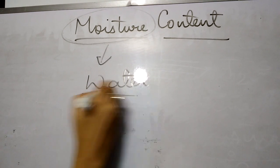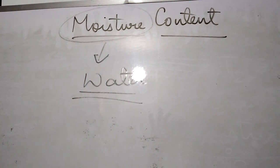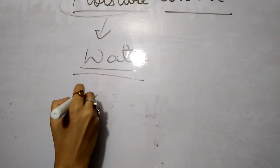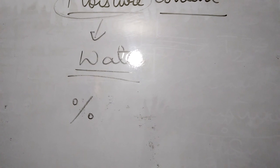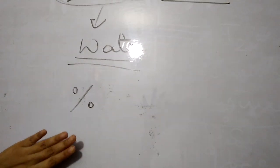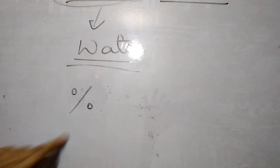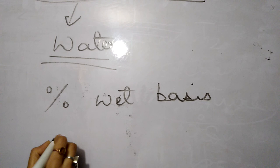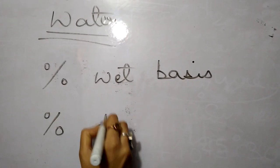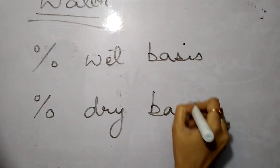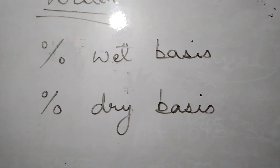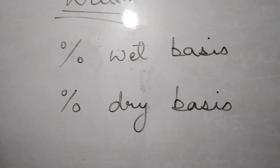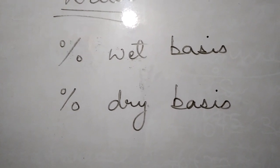Moisture content is generally expressed in percentage. There are two ways: percentage wet basis and percentage dry basis. First we have to understand these two concepts — jab yeh doh concepts aapke clear ho jayenge, tab aap numericals solve kar sakti ho.